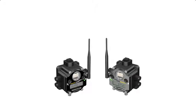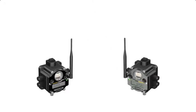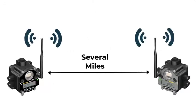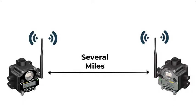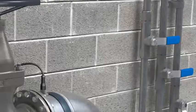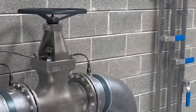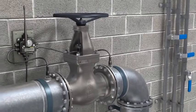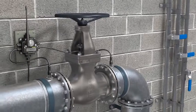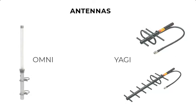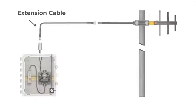Out of the box, our 900 MHz radios with standard antennas attached can communicate several miles with a clear line of sight. This gives you plenty of power to penetrate concrete, wood, and brick walls in your plant. Longer ranges are possible with our Omni and Yagi antennas.